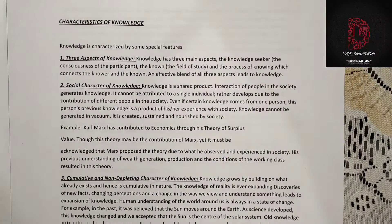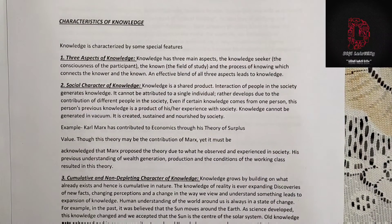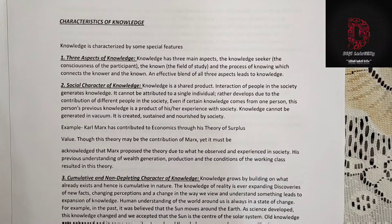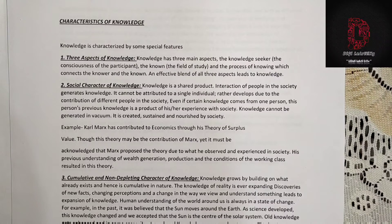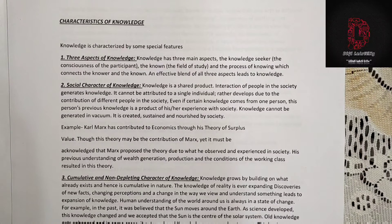Knowledge is characterized by some special features. First, knowledge has three main aspects: the knowledge seeker, which is the knower or participant; the known, which is the field of study; and the process of knowing, which connects the knower and the known. An effective blend of all three aspects leads to knowledge.